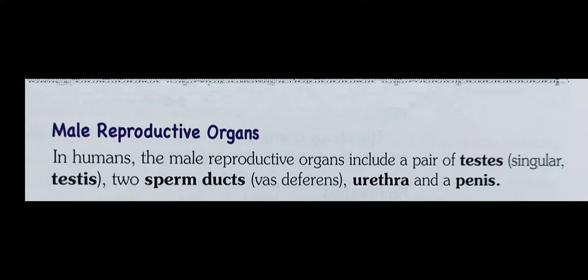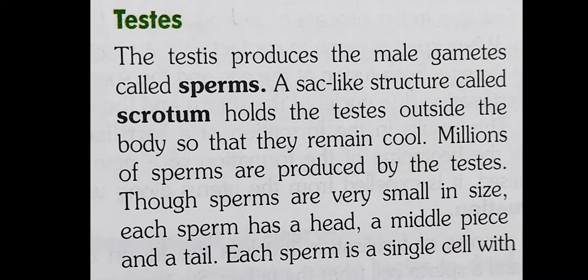In humans, the male reproductive organs include a pair of testes, two sperm ducts, urethra, and a penis. The testes produce the male gametes called sperms. A sac-like structure called the scrotum holds the testes outside the body so that they remain cool. Millions of sperms are produced by the testes, though sperms are very small in size.